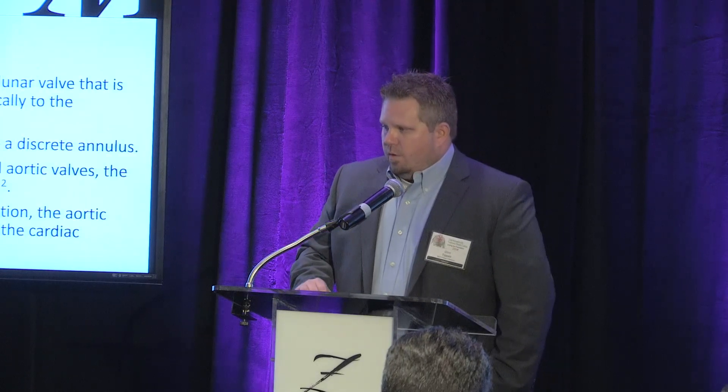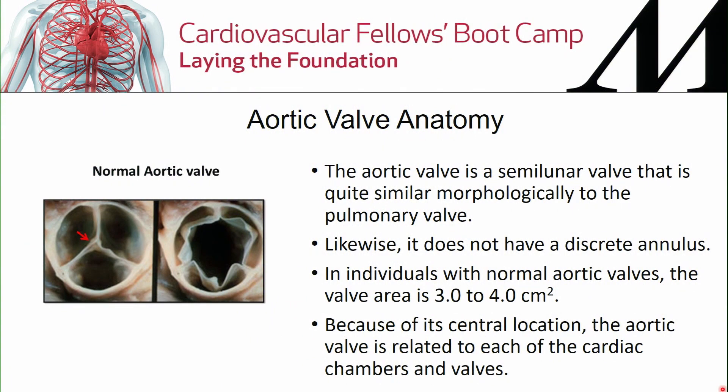We'll take a few minutes to review the anatomy from first-year medical school. The aortic valve is a tri-leaflet valve — hopefully tri-leaflet. Abnormal anatomy can include bi-leaflet, unicuspid, or even quadricuspid valves. It's considered a semilunar valve, similar to the pulmonic valve, with a similar embryologic development. Normal valve area ranges between 2.5 to 3.5 centimeters squared — some texts say 3 to 4. The aortic valve's central location means it touches all other chambers and valves.